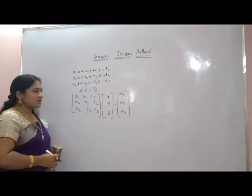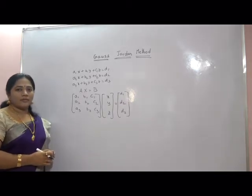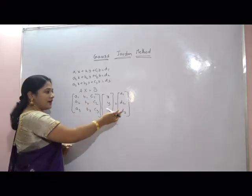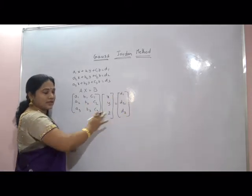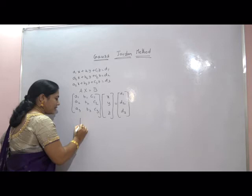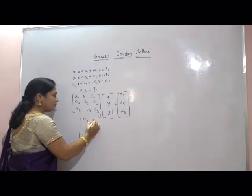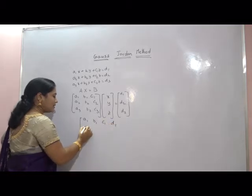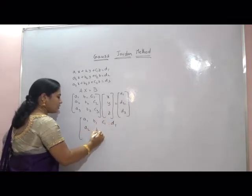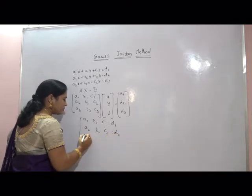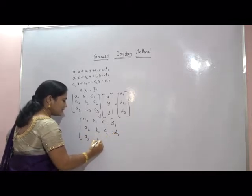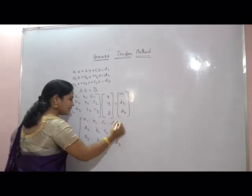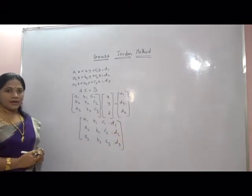The next step is to write down the augmented matrix. The augmented matrix is formed by writing the coefficients and the constants together in one matrix: A1, B1, C1; A2, B2, C2; A3, B3, C3 with D1, D2, D3 appended. This is the augmented matrix.